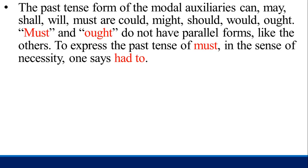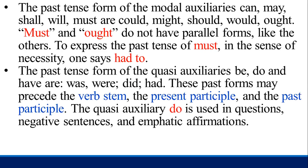The past tense forms of modal auxiliaries can, may, shall, will, must become: could, might, should, would, ought to. Must and ought to do not have parallel forms like the others to express the past tense of must in the sense of necessity — one says 'had to.' The past tense forms of quasi-auxiliaries be, do, and have are: was, were, did, and had. These past tense forms may precede the verb stem, present participle, and past participle.